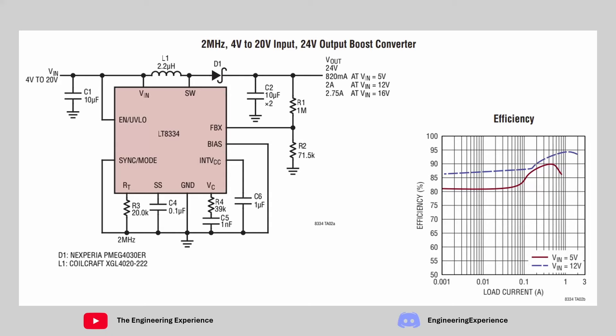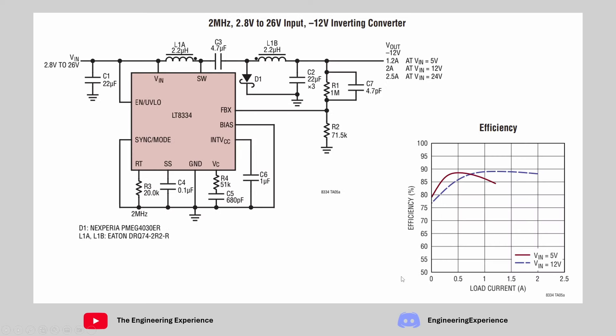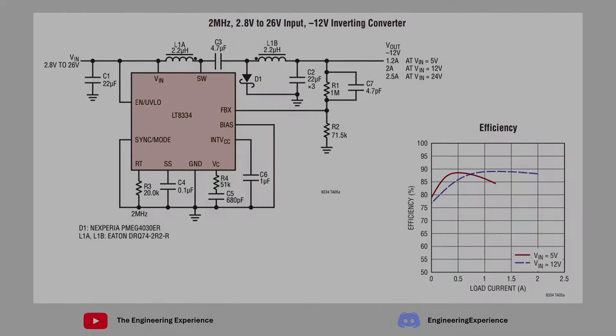In today's video I'll be showing you how to calculate the components for the boost converter and the inverting converter, and then doing the schematic capture on KiCad. On screen you've got the boost converter which will produce 24 volts DC, and this is the minus 12 volt inverting converter which I've changed the feedback network to produce minus 24 volts DC. So let's get started.